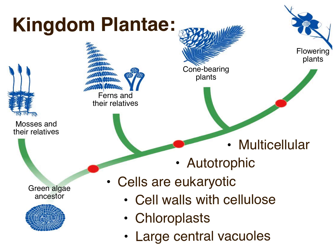And of course, as members of the domain Eukarya, their cells are eukaryotic. Those cells have a couple of distinct characteristics: they have cell walls around their outsides with cellulose to strengthen them, chloroplasts for photosynthesizing, and large central vacuoles for storing water, even on land.